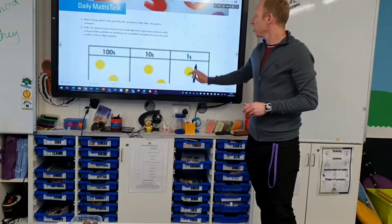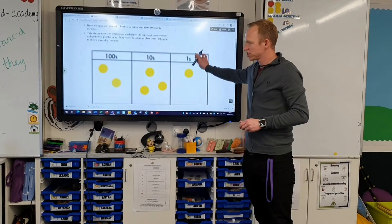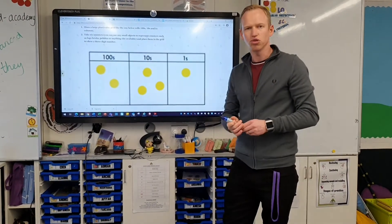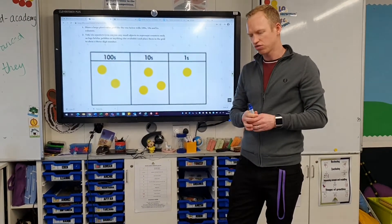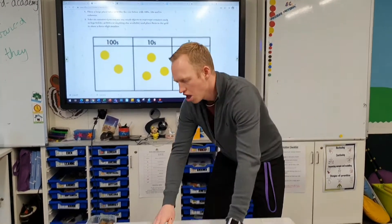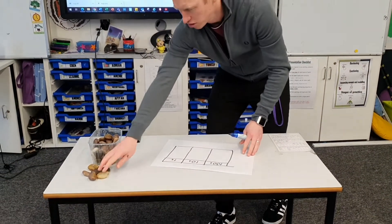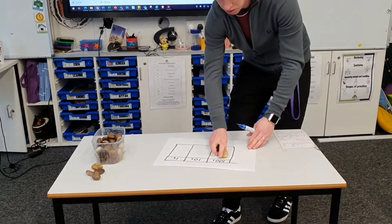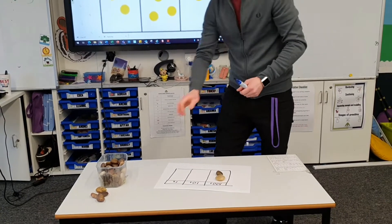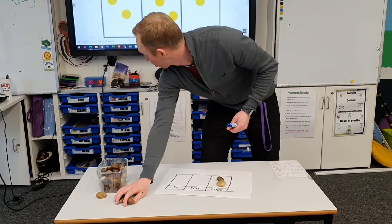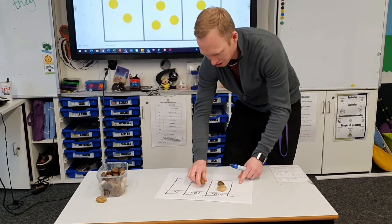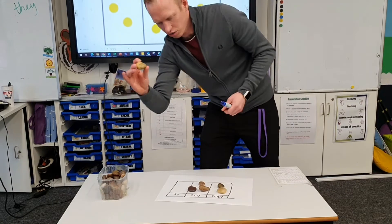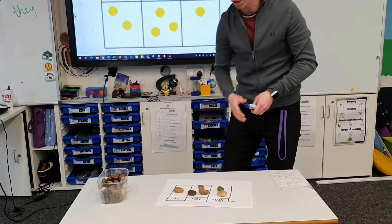Now you're going to take your six objects and put them into your place value grid. Just like the example on the board and on the instructions, I'm going to put two of my objects in the hundreds column and three of my objects in the tens column, and my final object in the ones column.